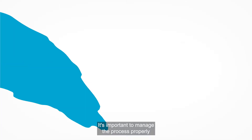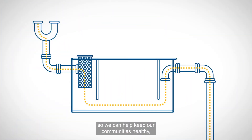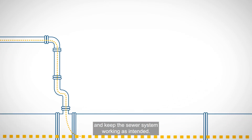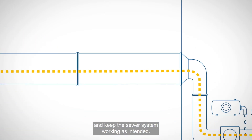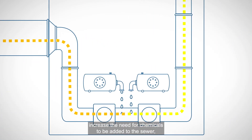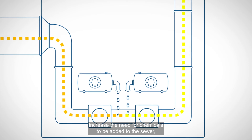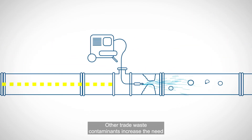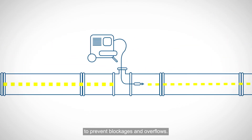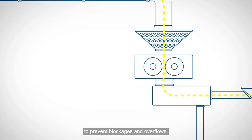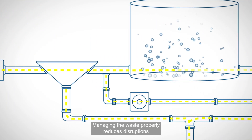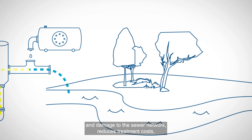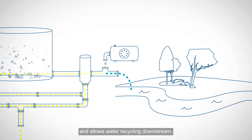It's important to manage the process properly so we can help keep our communities healthy, keep our environment safe and keep the sewer system working as intended. Some contaminants from Trade Waste increase the need for chemicals to be added to the sewer, to prevent odour and corrosion in the pipes. Other Trade Waste contaminants increase the need for cleaning of the pipes to prevent blockages and overflows. Managing the waste properly reduces disruptions and damage to the sewer network, reduces treatment costs and allows water recycling downstream.